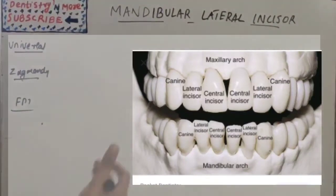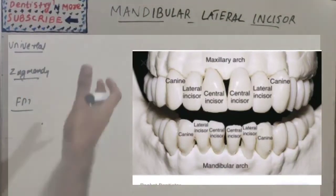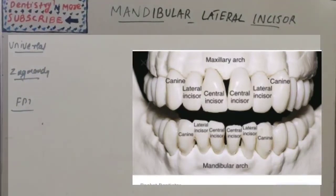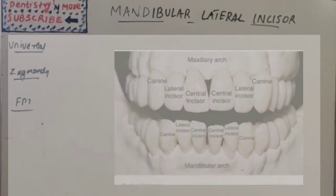At that time it has contact with the deciduous mandibular canine. The mandibular canine, the newer one, erupts around eleven years, maybe ten to eleven years. So once it erupts, the contact will be with the permanent mandibular canine.